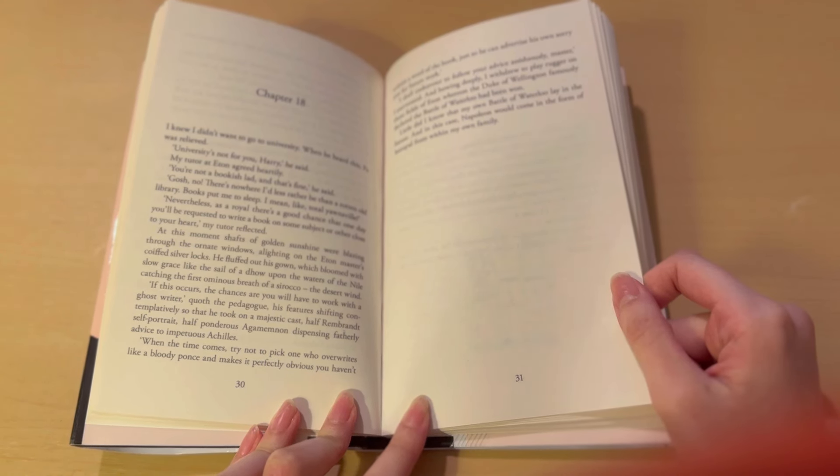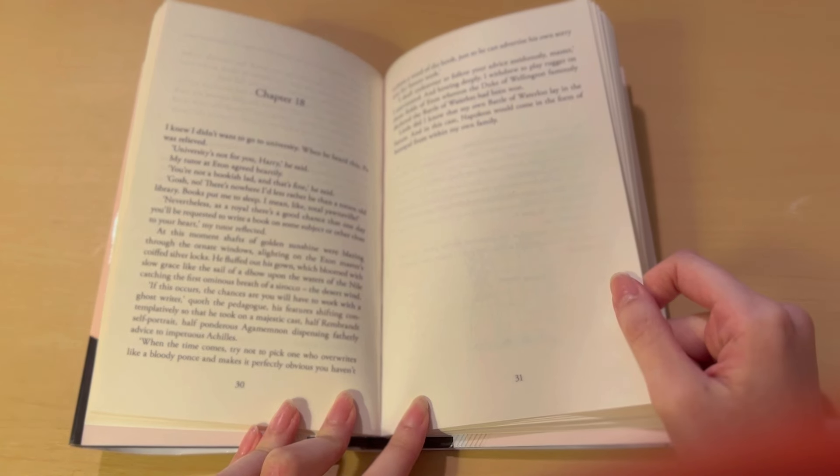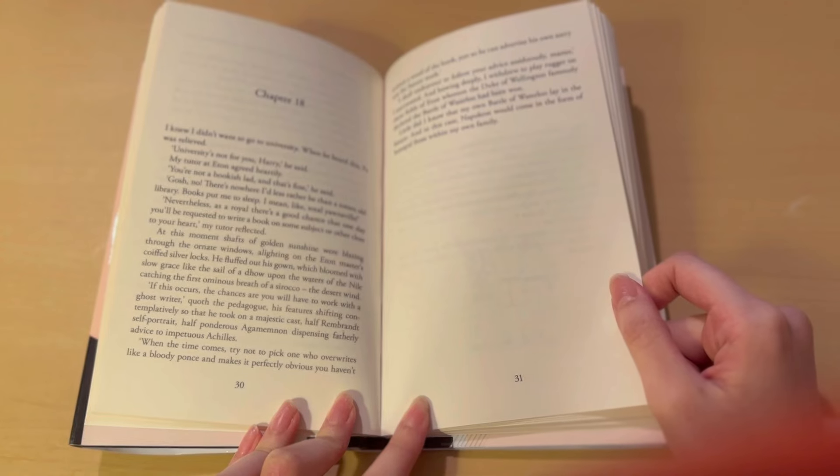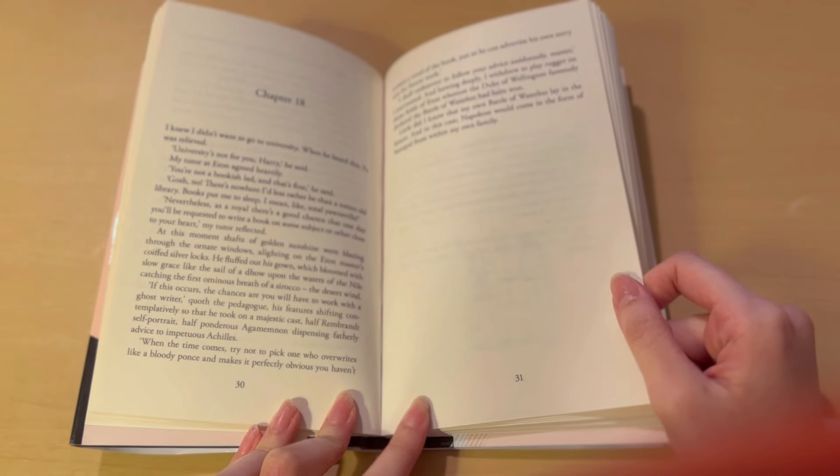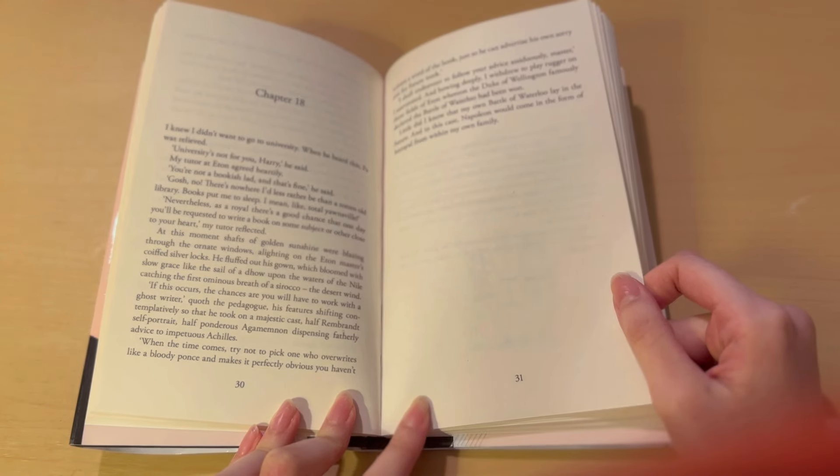At this moment, shafts of golden sunlight were blazing through the ornate windows, alighting on the Eton master's coiffed silver locks. He fluffed out his gown, which bloomed with slow grace, like the sail of a dhow upon the waters of the Nile, catching the first ominous breath of a Sirocco, the desert wind.